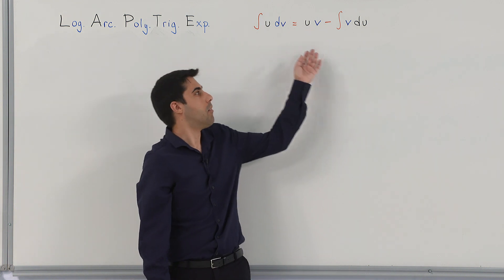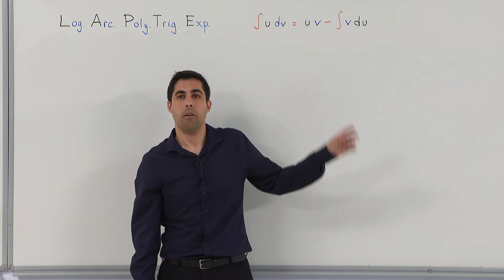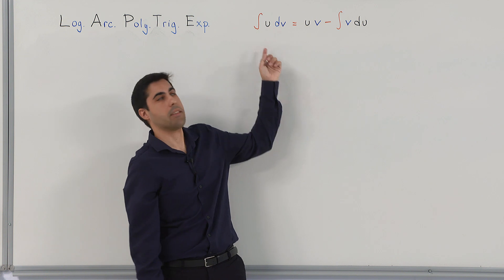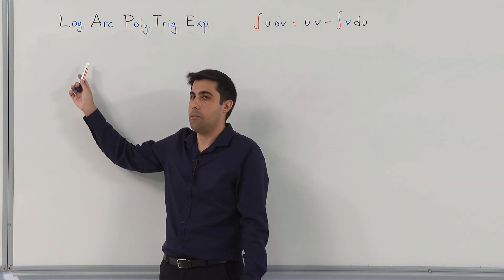Today, we have seen the integration technique integration by parts. The formula derives from the product rule for derivatives. When applying this technique, the most important thing is to determine which factor to call u and which to call v. For this, we have the shortcut LAPTE. If you do it the other way around, the integral may get more complicated. Note that integration by parts does not guarantee a solution for every product — for such problems, you need to apply other integration techniques.